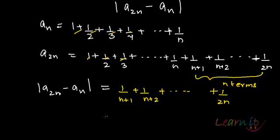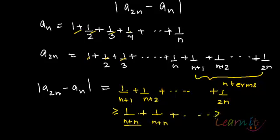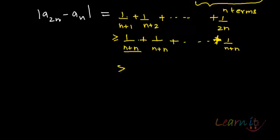Notice that each of these remaining terms is greater than 1/(2n), because n is greater than 1 so the denominator is increasing, meaning each term is less than its predecessor but still greater than or equal to 1/(2n). So the sum is greater than or equal to n times 1/(2n), which is essentially 1/2.